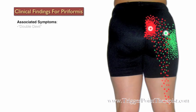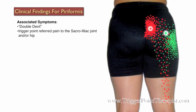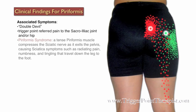Clinical findings for the piriformis muscle: Dr. Travell refers to the piriformis muscle as the double-devil because trigger points in this muscle can cause pain in two ways. First, by the referred pain to the sacroiliac joint and or the hip, and second, by a condition known as piriformis syndrome, where a tense piriformis muscle compresses the sciatic nerve as it exits the pelvis, causing sciatica symptoms such as radiating pain, numbness, and tingling that travel down the leg to the foot.